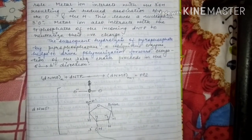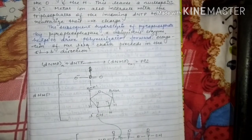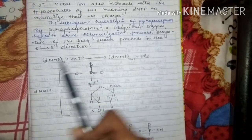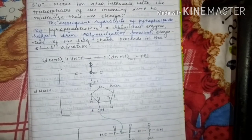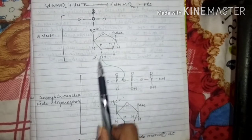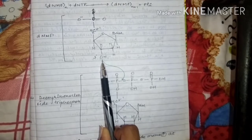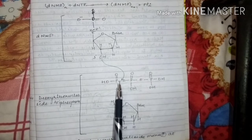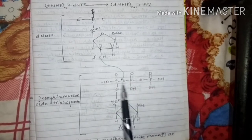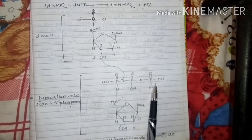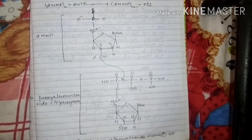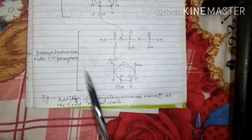Elongation of DNA proceeds in the 5' to 3' direction. In the reaction, the metal ion interacts with the 3'OH for a nucleophilic attack on the alpha-phosphate of the incoming nucleotide. Pyrophosphate — composed of beta- and gamma-phosphates — is released, and a phosphodiester bridge forms. The incoming nucleotide is added to the 3'OH end, and elongation proceeds. This is the reaction for the addition of deoxyribonucleoside monophosphate at the 3' end of the DNA chain.